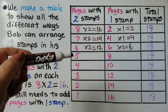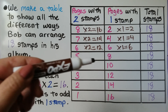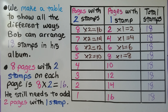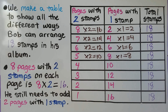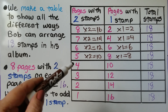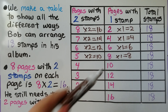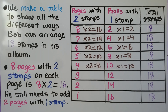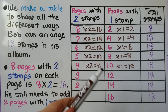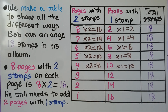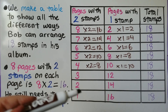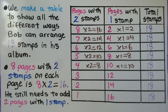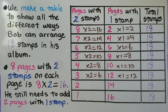For five pages of two and eight pages of one, we would have 10 stamps and eight stamps — that's equal to 18. We can do it for four pages of two and 10 pages with one stamp each: eight stamps and 10 stamps, that's 18 stamps. We can do it for three pages with two stamps each, plus 12 pages with one stamp each: six stamps plus 12 stamps is equal to 18 stamps.